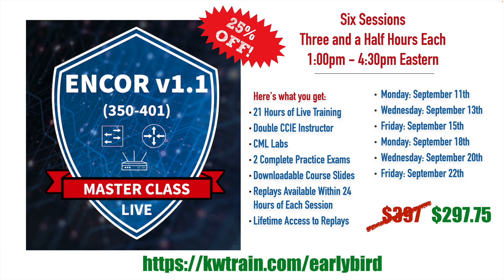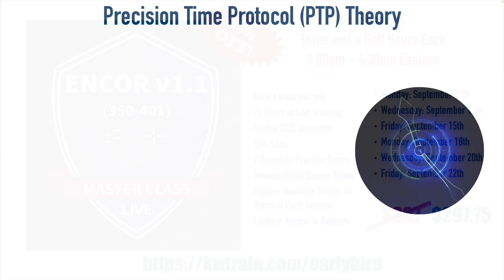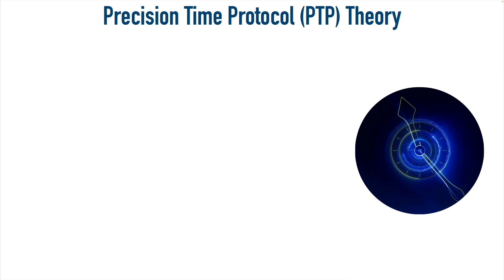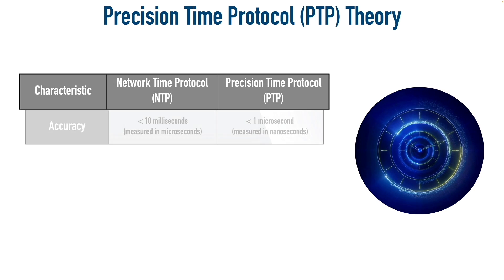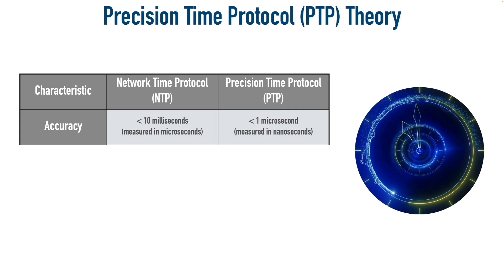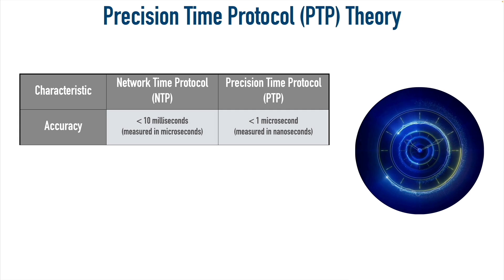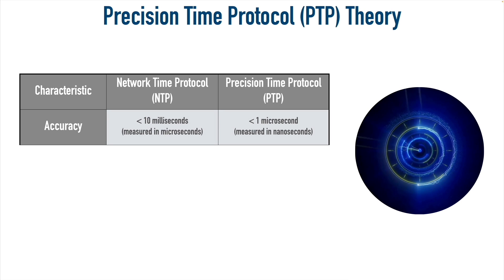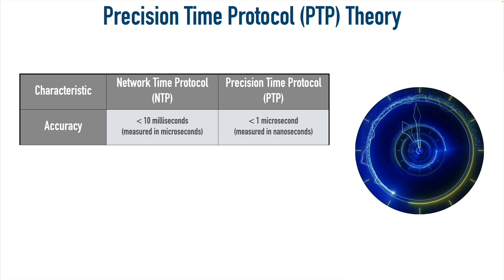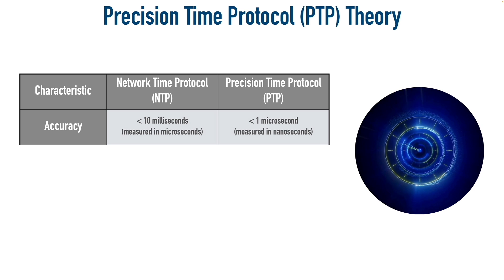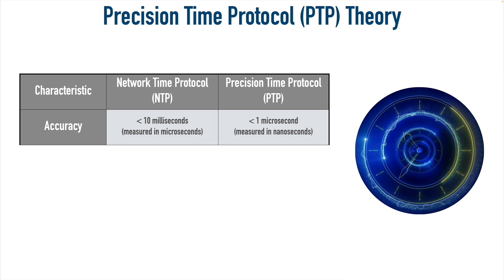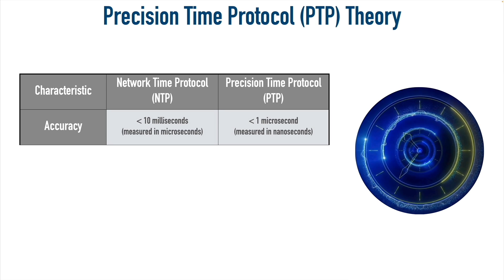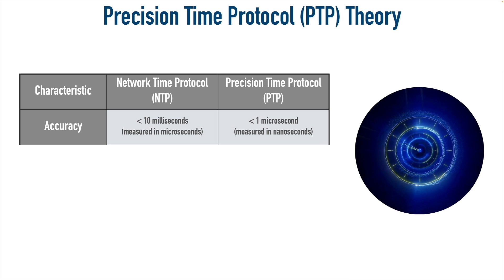We know that NTP, or Network Time Protocol, allows us to synchronize our network devices, but there's a more accurate protocol called PTP — Precision Time Protocol. While NTP is really accurate, its goal is to provide accuracy under 10 milliseconds. But PTP's goal is to provide accuracy of less than 1 microsecond, and as a result, we measure that accuracy in terms of nanoseconds.